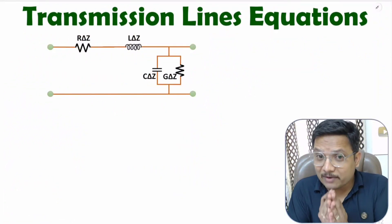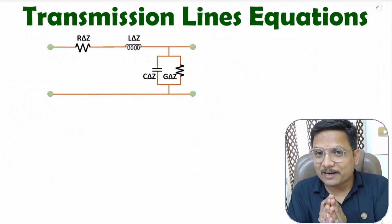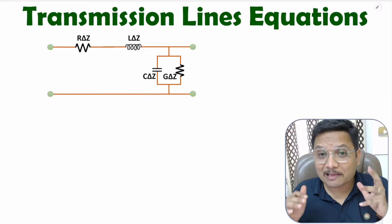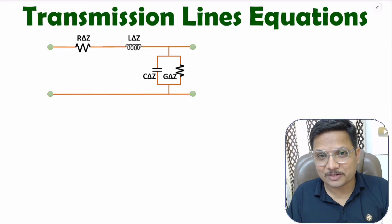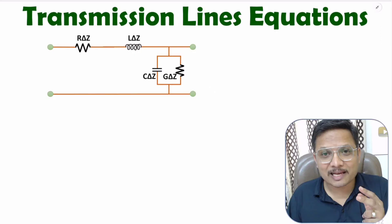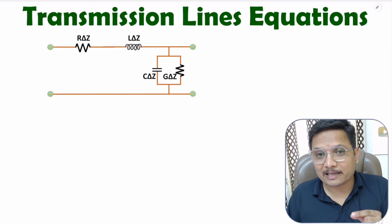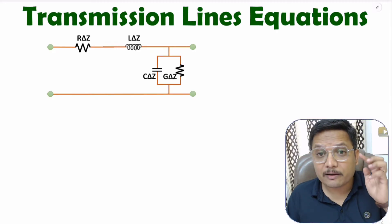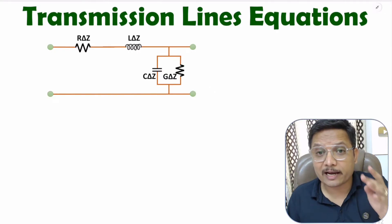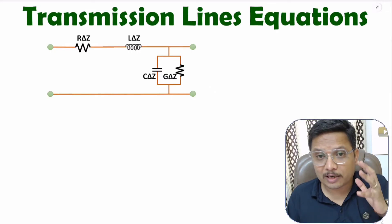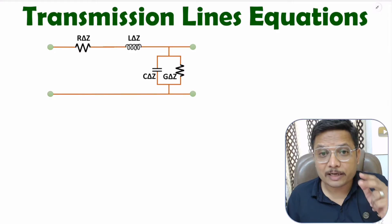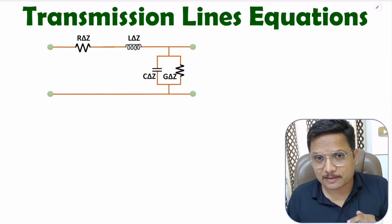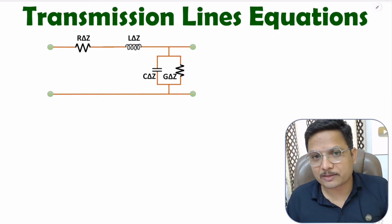Hello friends, welcome to Engineering Panda family. In this video, I will be deriving transmission line equations. Based on transmission line equations, one can identify parameters of transmission line like characteristic impedance, propagation constant, phase constant, attenuation constant, reflection coefficient and VSWR. So to understand all those parameters, you need to know transmission line equations, and here I will be deriving those equations.